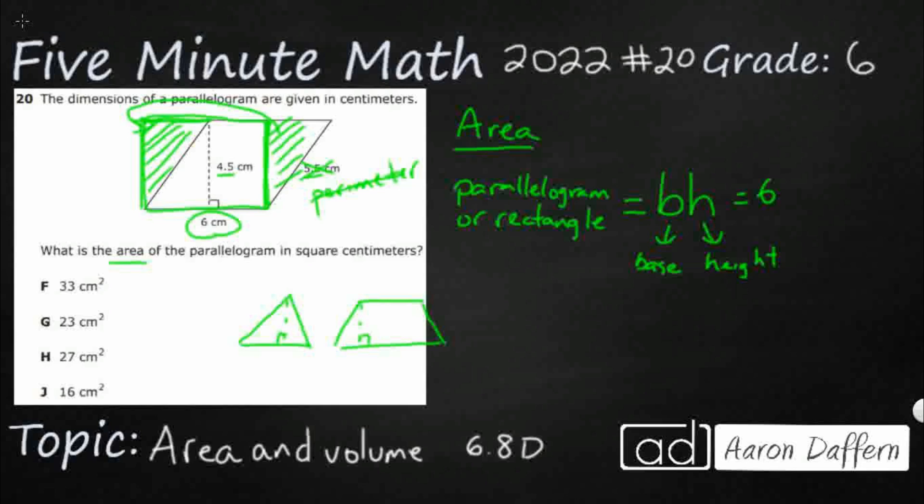This is not perpendicular to the base. This is an obtuse angle, so it has to be a right angle. And so, they give you this little dotted line with a little square saying this is a right angle. It's perpendicular, so this is our height. And so, that is what we need, the 4.5. And then once we do that, all we've got to do is multiply the two.